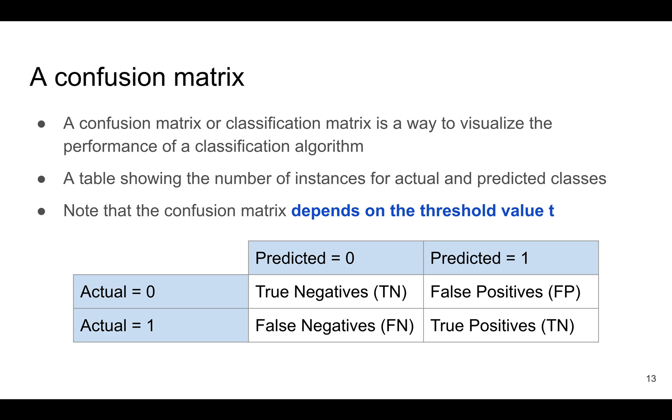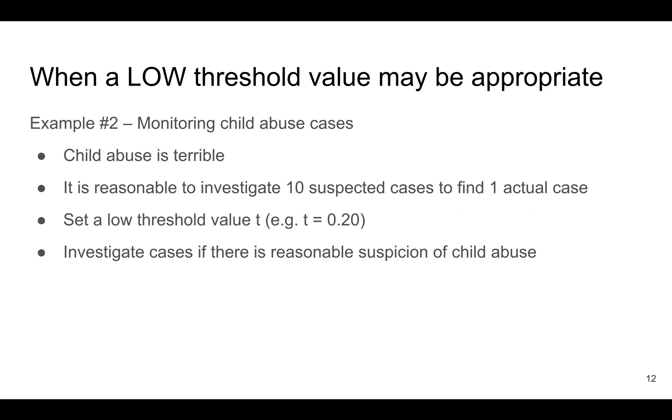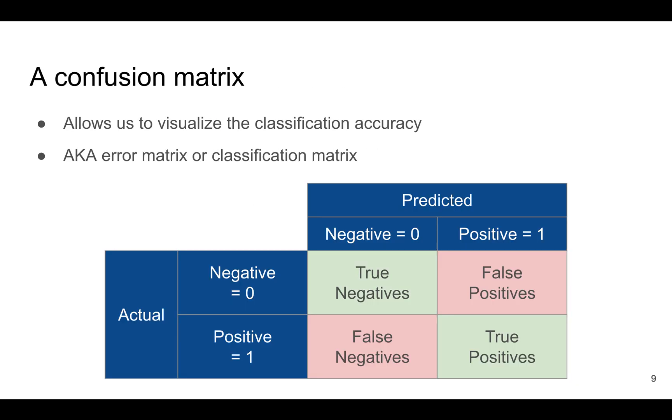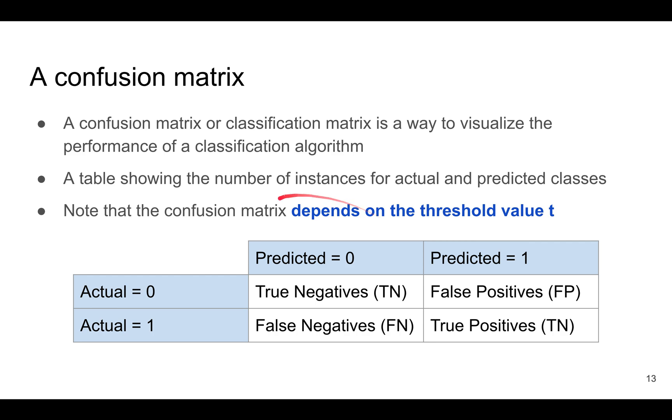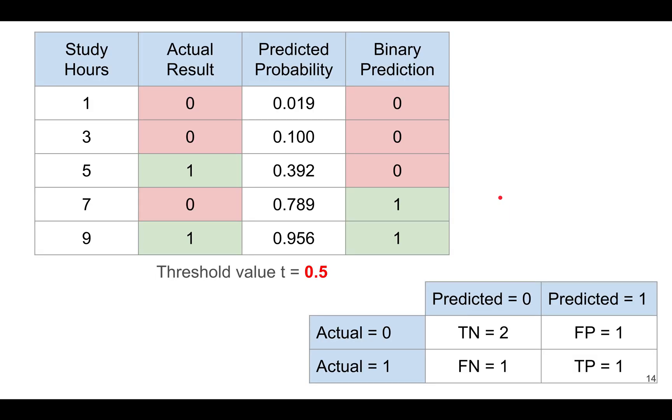The main point is this confusion matrix depends on the threshold value that you choose. Let's take a look. Here the threshold value is 0.5 and this is the confusion matrix.